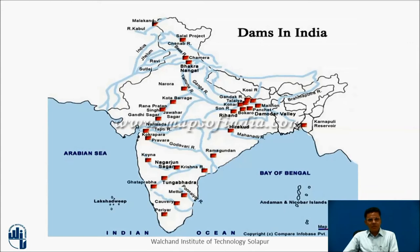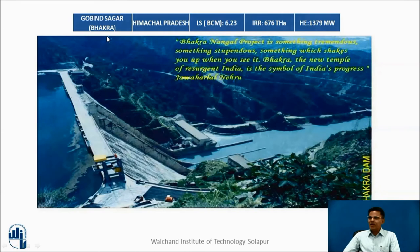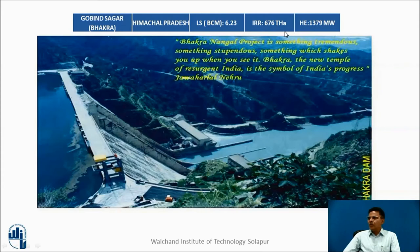These are the major dams of India and their salient features: Govinda Sagar (Bhakra), Thein, Hirakud, Sardar Sarovar — listing the states in which these dams are located and their live storage in billion cubic meters. This is Govinda Sagar Bhakra Dam in Himachal Pradesh, which has a live storage of 6.23 BCM.